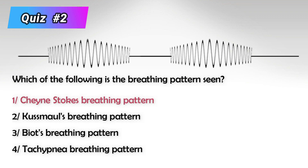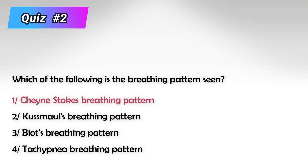Indeed, we see the patient displaying apnea, followed by a gradual increase, then gradual decrease of breathing, then another period of apnea. And this is descriptive of Cheyne-Stokes breathing pattern.